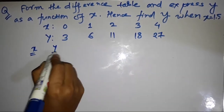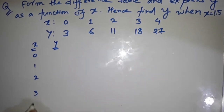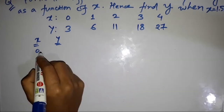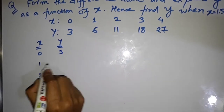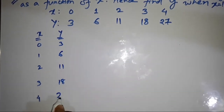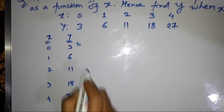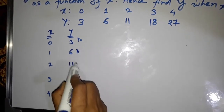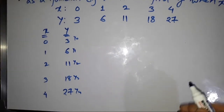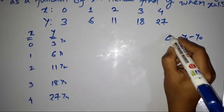The X column contains 0, 1, 2, 3, 4 — write every number with a gap. The corresponding Y values are: 0→3, 1→6, 2→11, 3→18, 4→27. We label these Y₀, Y₁, Y₂, Y₃, and Y₄ respectively.